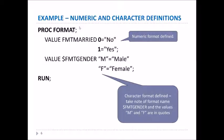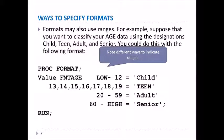Here are some specific examples. The first is a numeric format where we're creating a format called FMT_MARRIED, assigning 0 to 'no' and 1 to 'yes'. The second is a character format, dollar sign FMT_GENDER, where we're assigning the value M to 'male' and F to 'female'. You can also assign ranges to specific formats.